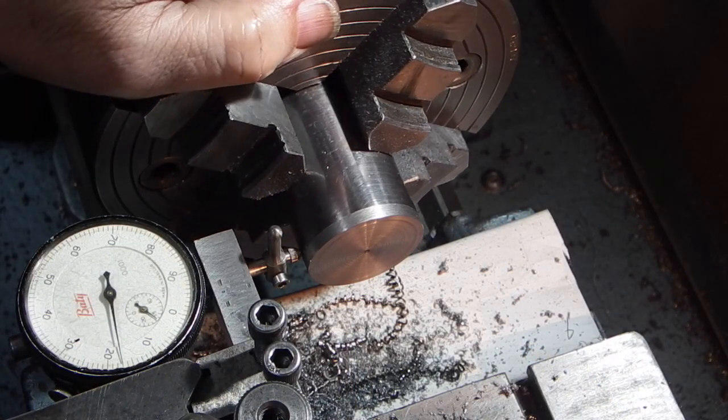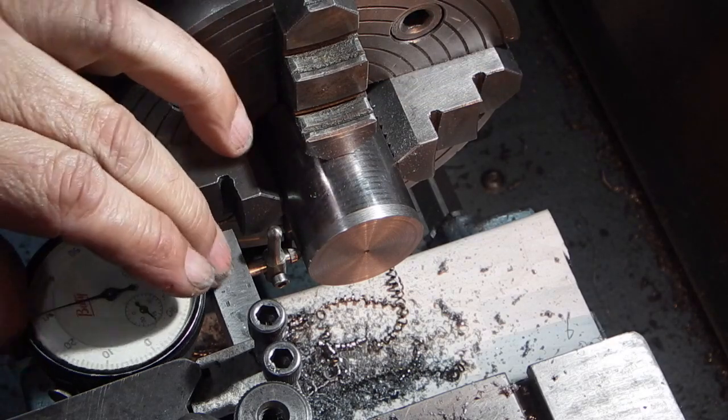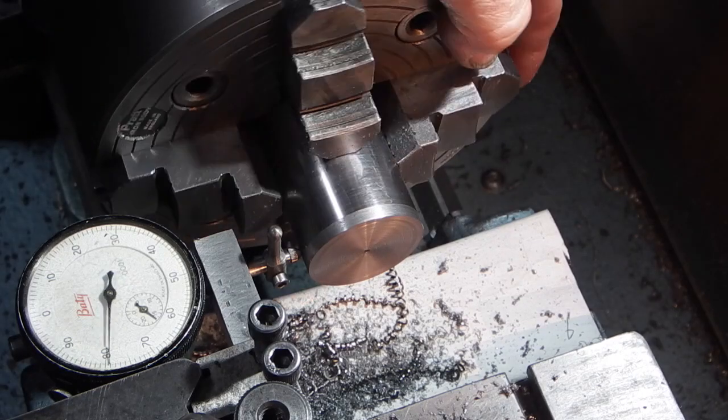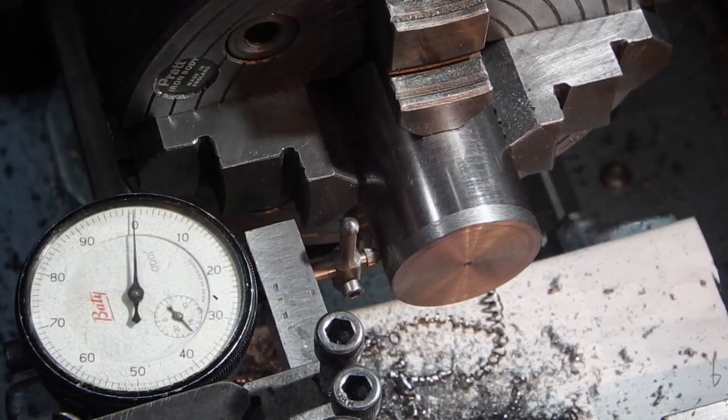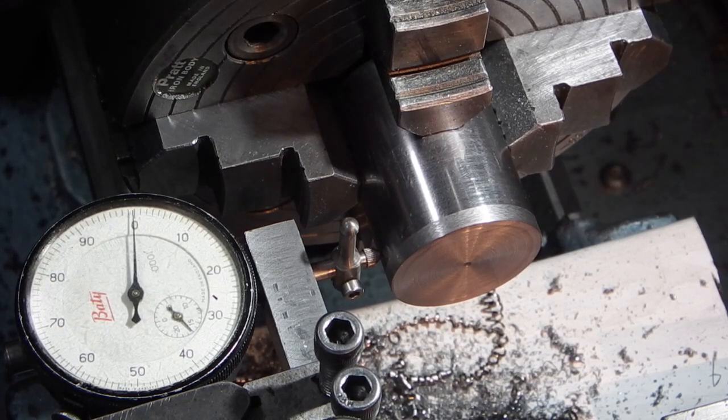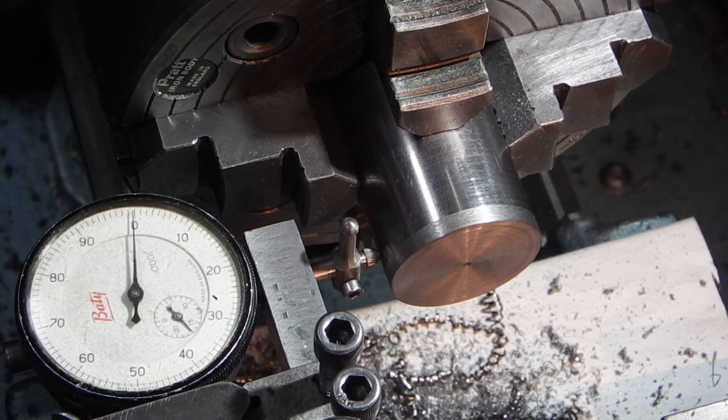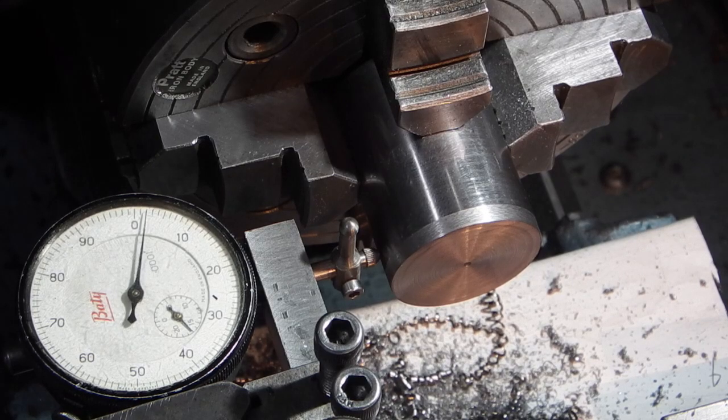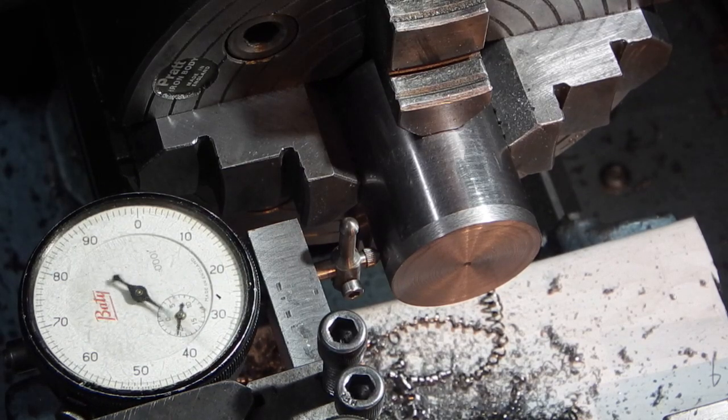The dial indicator is in ten divisions or a thou so that's running out zero, two and a half thou. First of all I want to move this five millimeters across, which is 196 thou. I've just touched the dial indicator on it, set it to zero, so I'm moving the dial indicator in 196 thou.